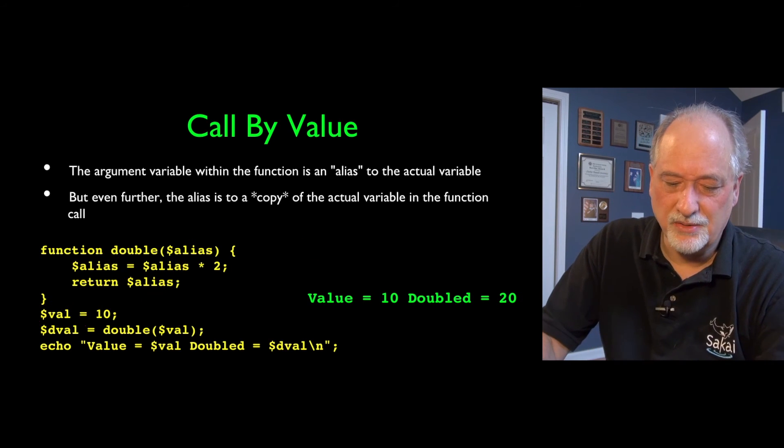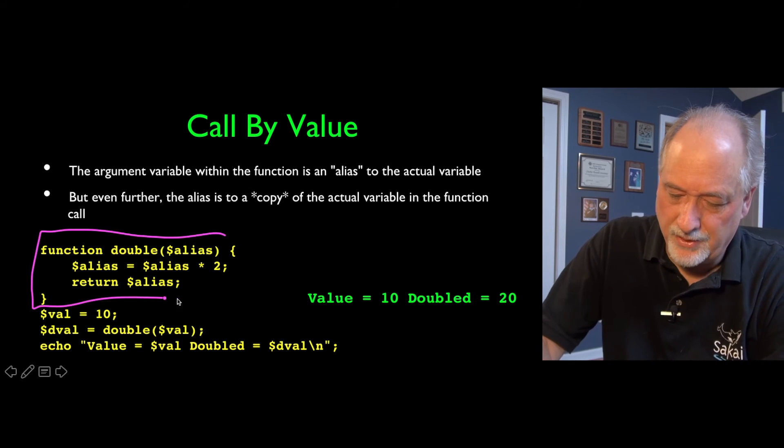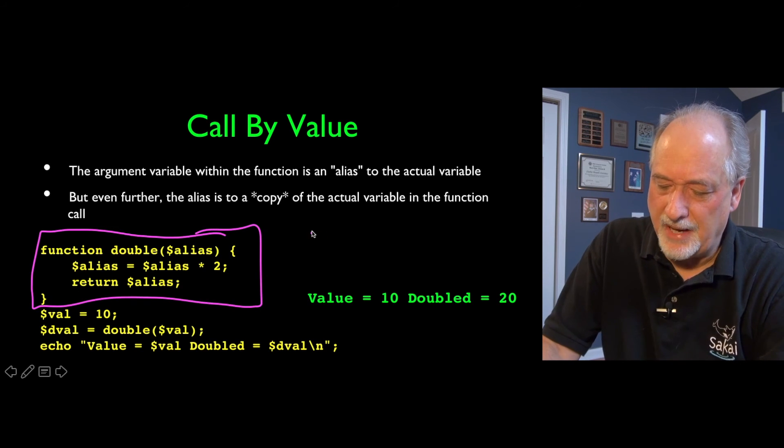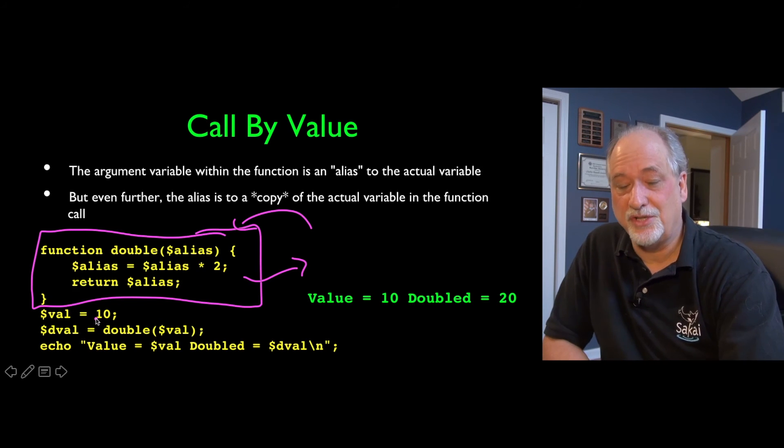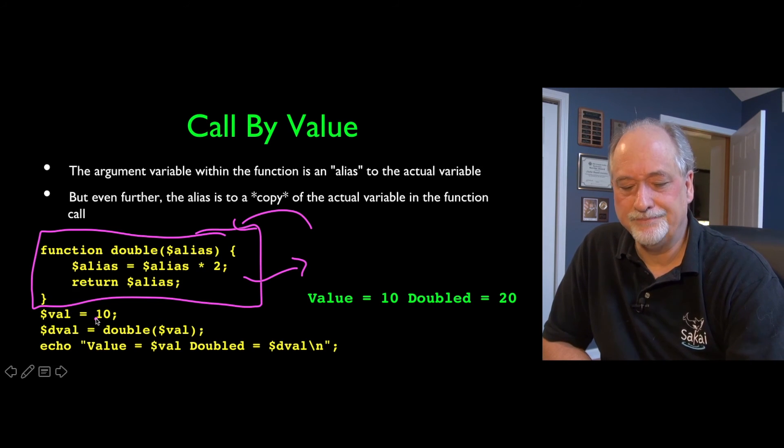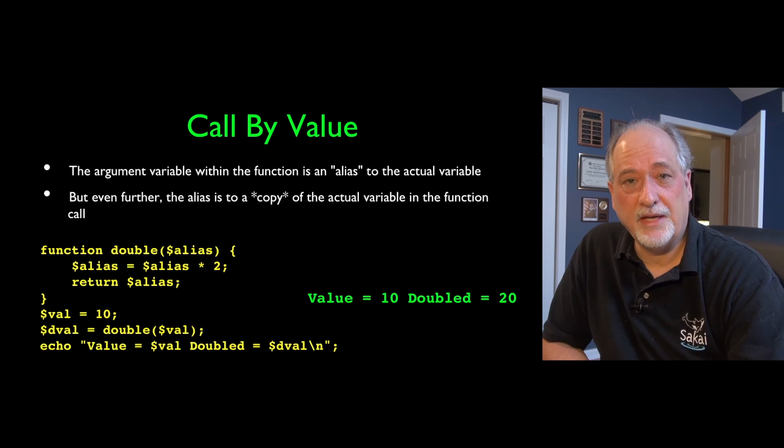And it's a good way to sort of draw a really solid boundary around the function, and pass something in, and get something back out, and not have it mess with our variables. It's like just an isolation. And so call by value is pretty typical.